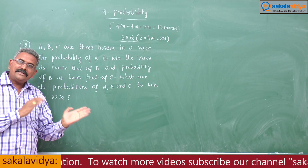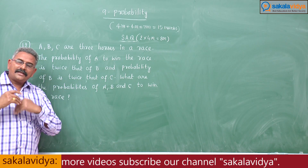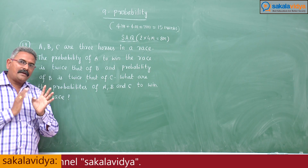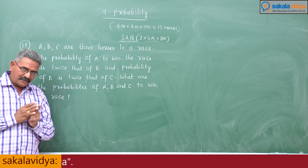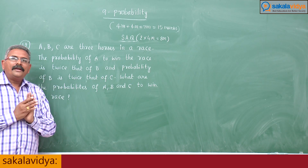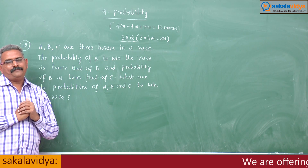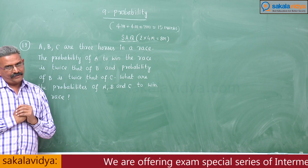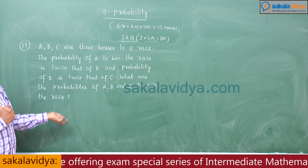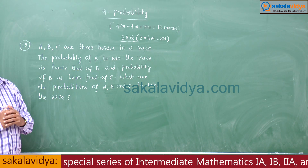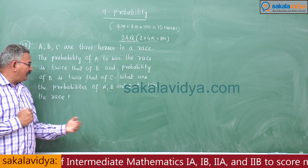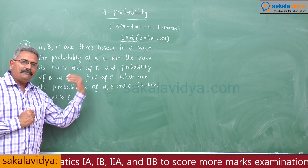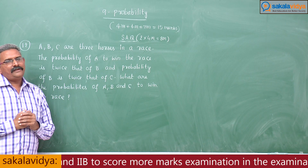Also, since A, B, C are mutually exclusive events, P(A union B union C) becomes P(A) + P(B) + P(C). That is from the probability axiom — the union axiom. So using these relations, we can easily find out the probability of winning the race by A, B, and C respectively.